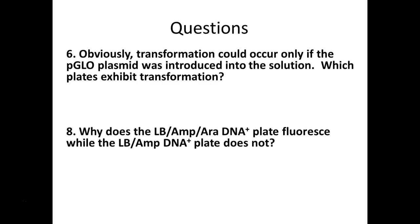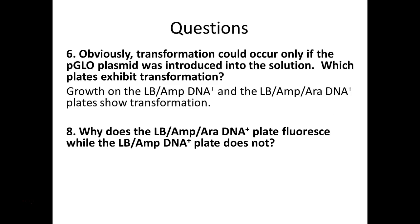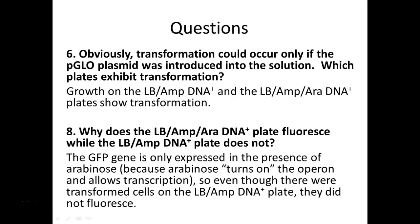Only transformation can happen if we gave cells the plasmid, so only plus plates should show transformation. We have two positive plates: LB/ampicillin and LB/ampicillin with arabinose. When we look next week, only one of them is going to glow — the one with arabinose. Without the sugar arabinose acting as the inducer to allow RNA polymerase to bind the promoter and transcribe the GFP gene, fluorescence won't occur. Without that inducer, green fluorescent protein simply won't be produced.